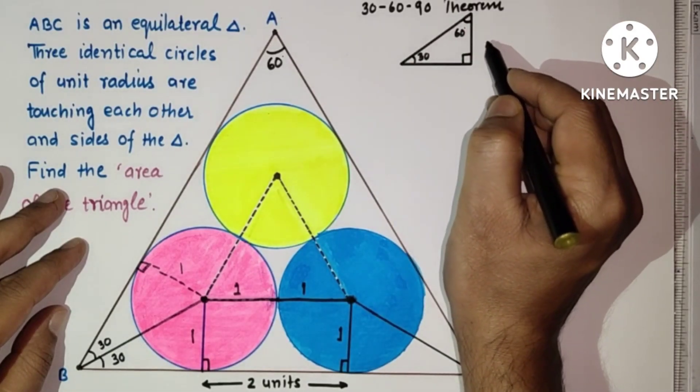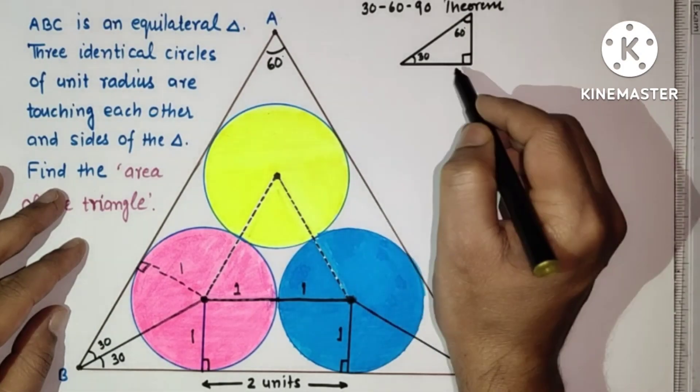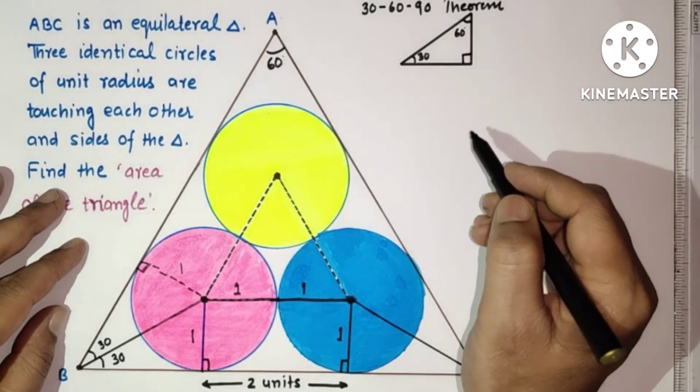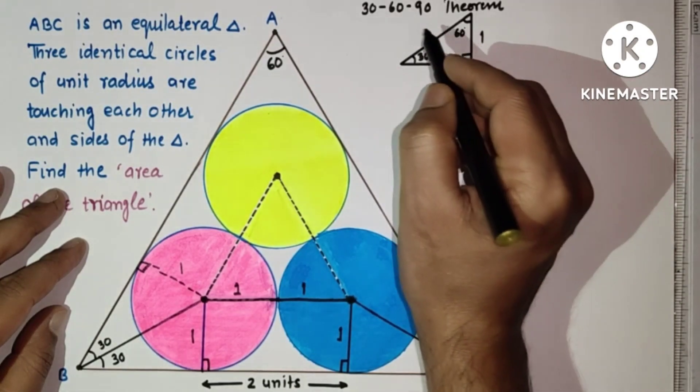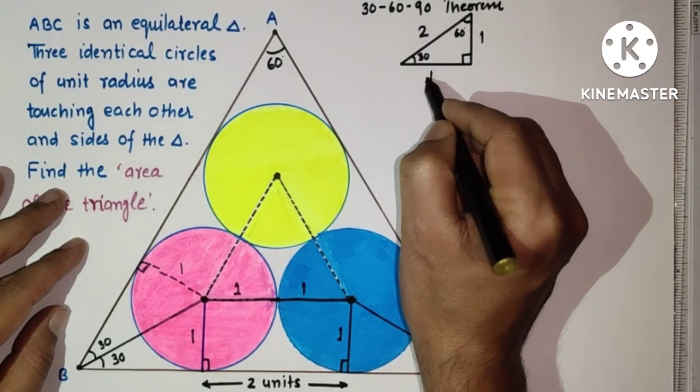So this will be a, and side opposite to 60 degree means this side will be root 3 by 2 times of hypotenuse. If it is 1, then this will be 2, and then this will be root 3.